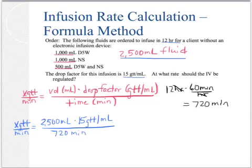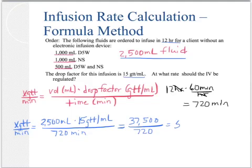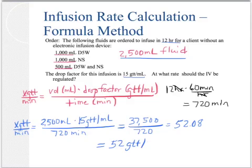Doing the math: 2,500 × 15 = 37,500 ÷ 720 = 52.08. Since we cannot calibrate in less than full drops, we apply our rounding rules. Looking at the tenths position, which is 0, since that is less than 5, we simply leave our whole number as 52 drops per minute. That is our answer.